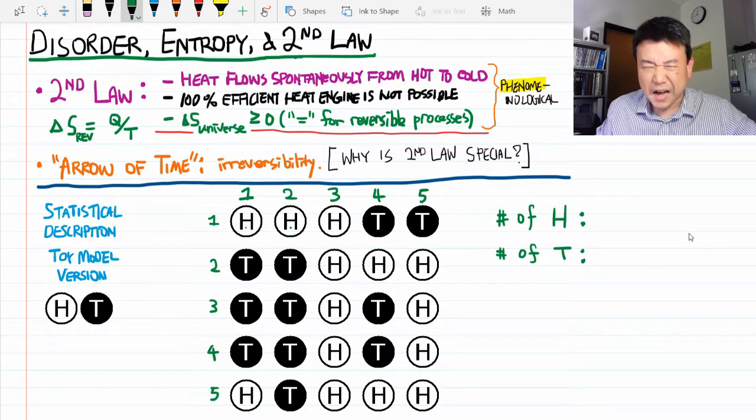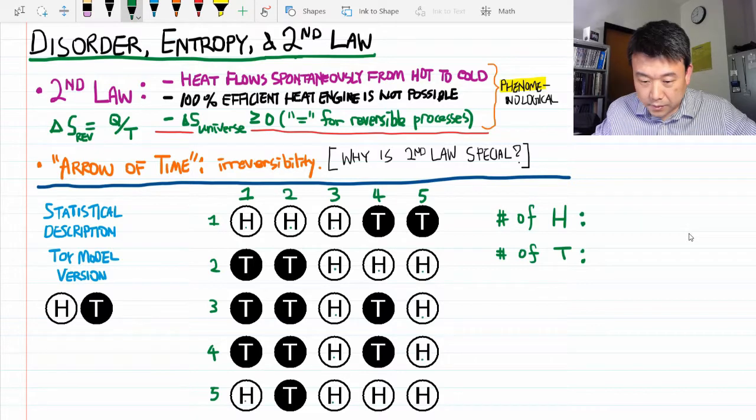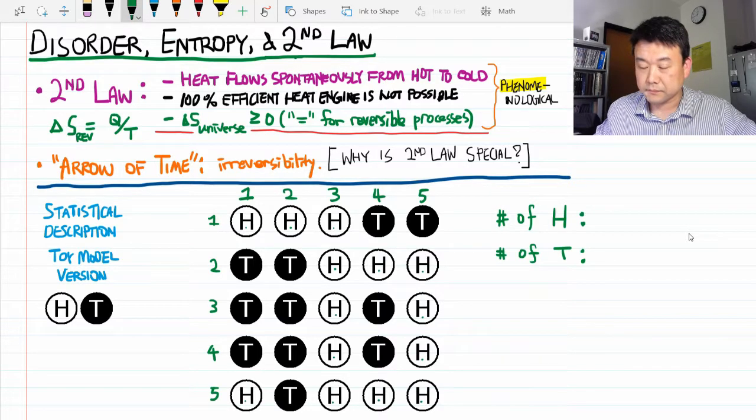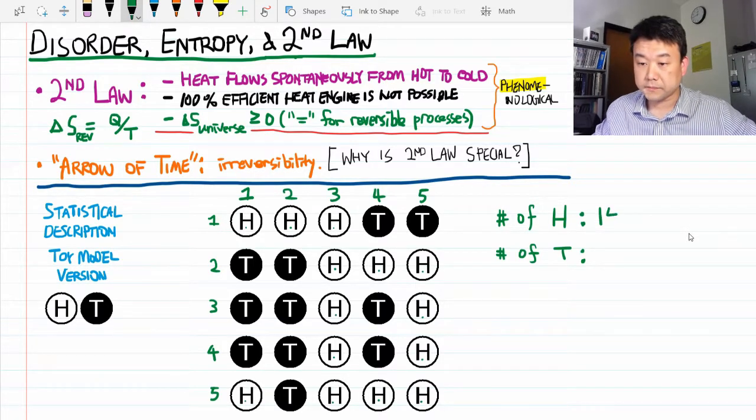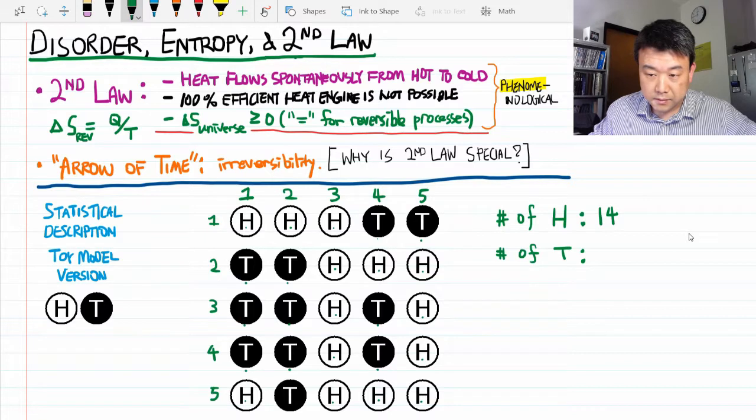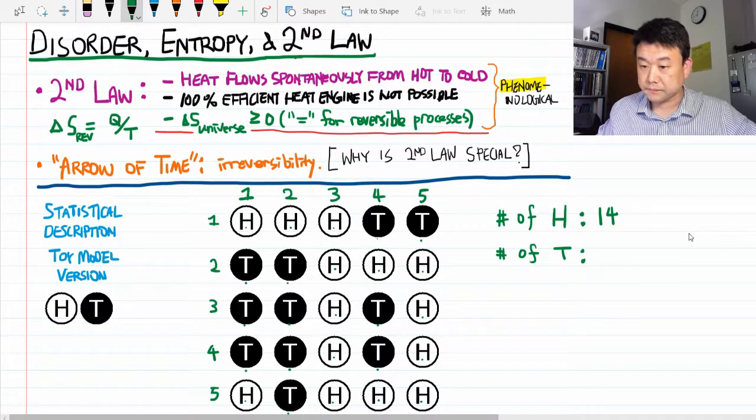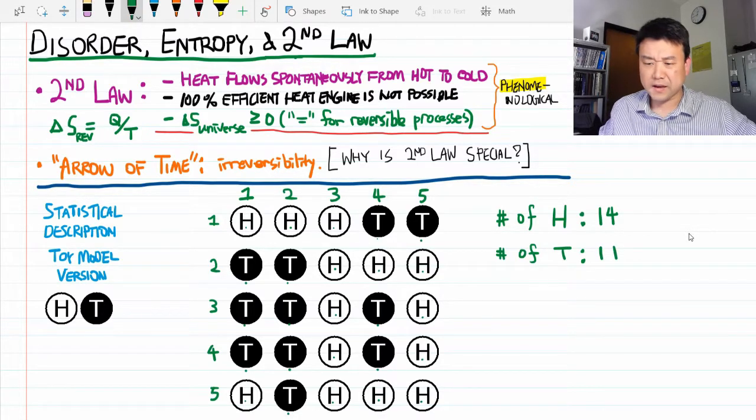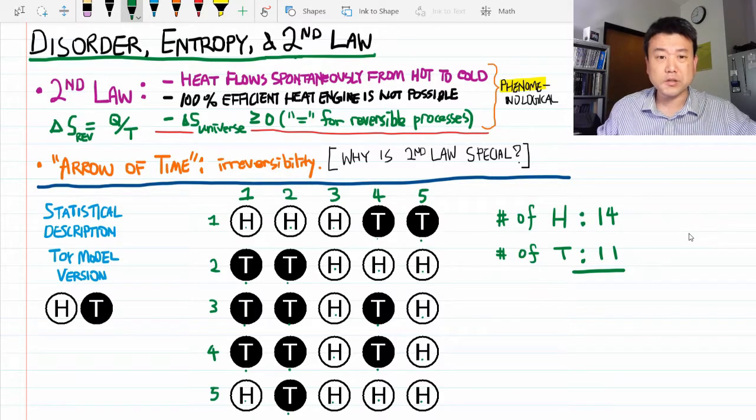One, two. I'll count silently. 13, 14. Counting the number of tails. One, two, 10, 11. And they add up to 25, just a quick checksum.